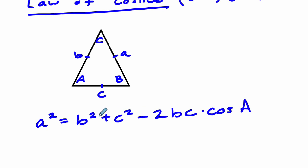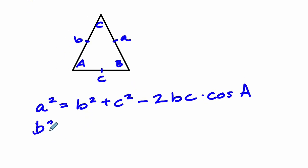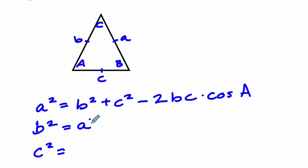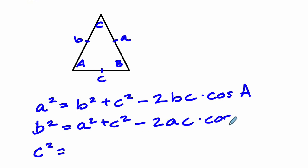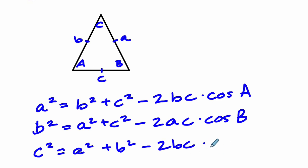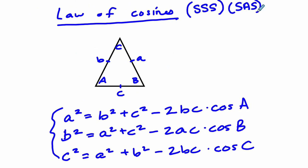How do you memorize it? The next version of the formula starts with B squared, and the third version starts with C squared. There are three common ways to write this, each from a different perspective. Use the A-squared version when focusing on angle A or side A. For B squared, it equals A squared plus C squared minus 2AC times cosine of angle B. And C squared equals A squared plus B squared minus 2AB times cosine of angle C.